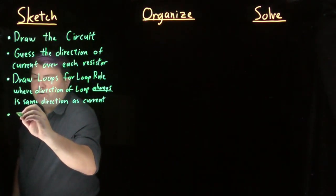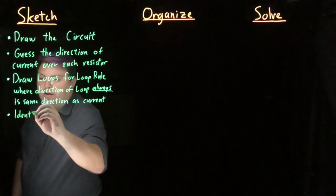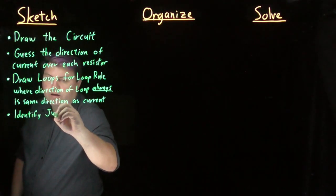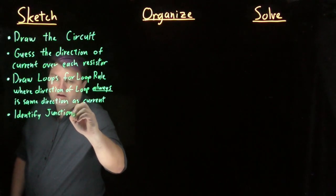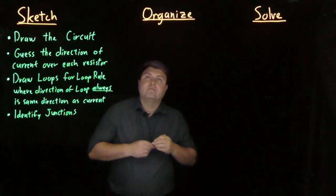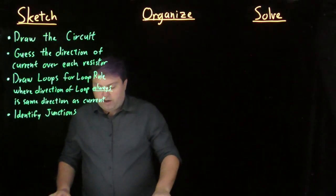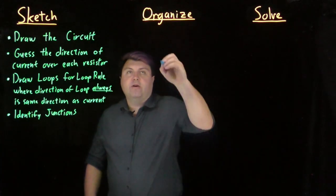Once we do this, we also want to identify junctions. So in our organized step, we have our junction rule.